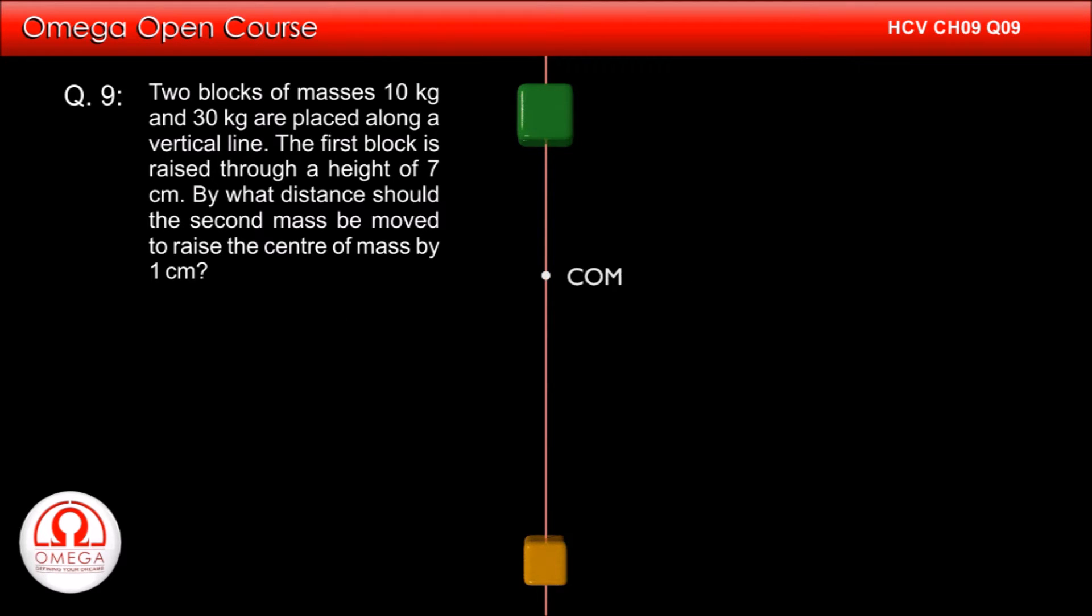Two blocks of mass 10 kg and 30 kg are placed along a vertical line. The first block is raised through a height of 7 cm. By what distance should the second mass be moved to raise the center of mass by 1 cm?